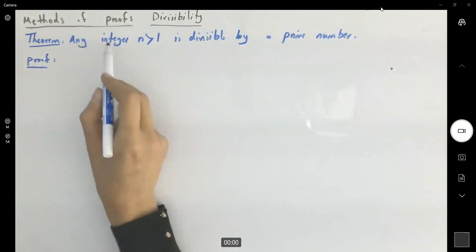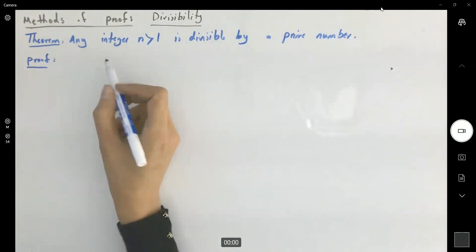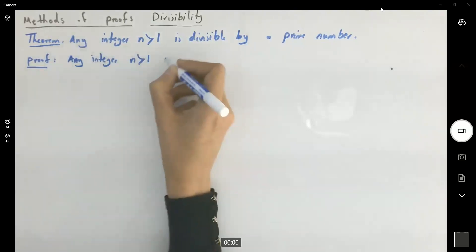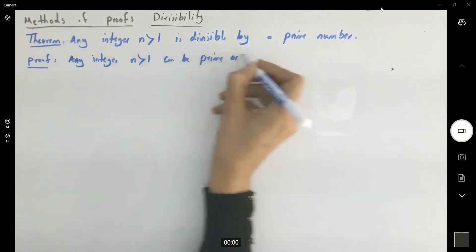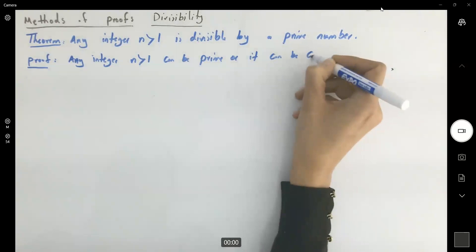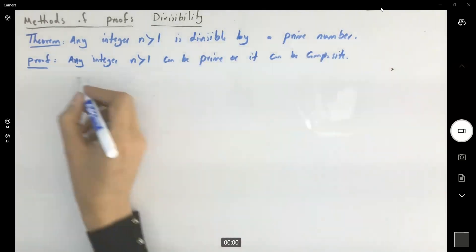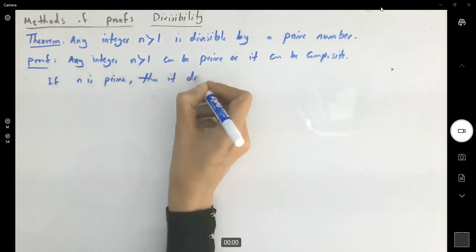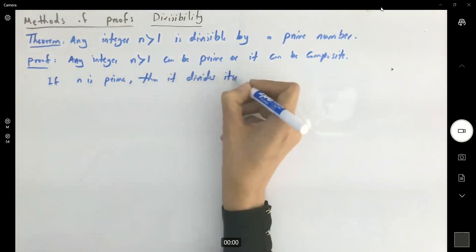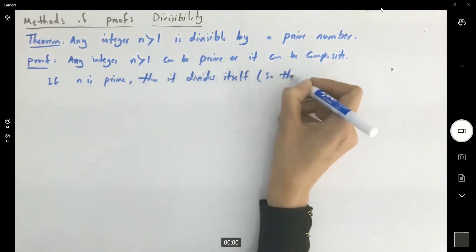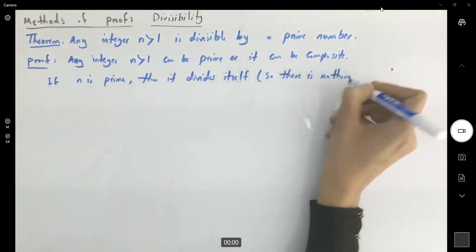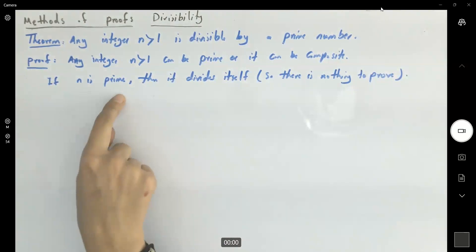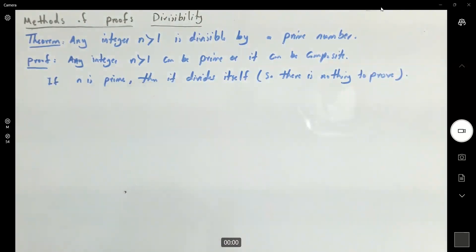Any integer can be prime or it can be composite. Any integer like n larger than one can be prime or it can be composite. So if n is prime, then it divides itself. There is nothing to prove. This is the very first scenario: if n is a prime number, then it divides itself as a factor of itself, so there is nothing to prove.